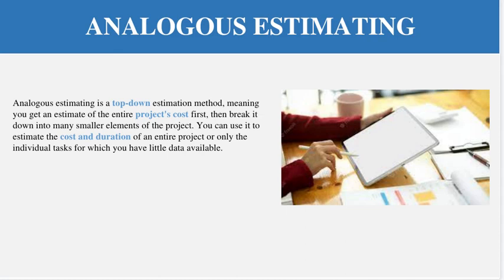Analogous estimation is a top-down approach. Top-down approach means we do the estimation as a whole first. For example, you say six months is required for implementing an e-commerce solution. Then you break it down — for example, one month for planning, two months for development, one month for testing. So based on the overall estimation first, you then break it down into further modules. Top-down means you estimate from the top level and break it down into smaller pieces. This same approach applies to both cost and duration.